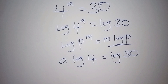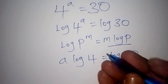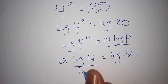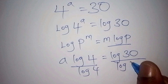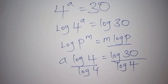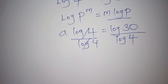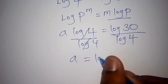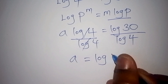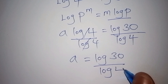From here, we want to isolate A on one side, so we divide both sides by log 4. The log 4 on the left cancels, and we remain with A equals the log of 30 all over the log of 4.